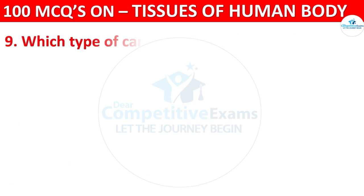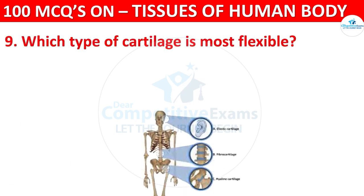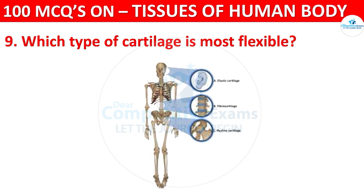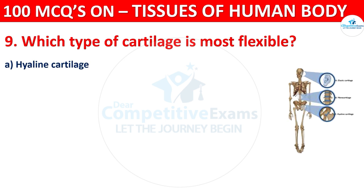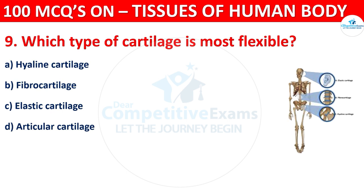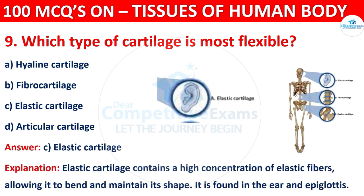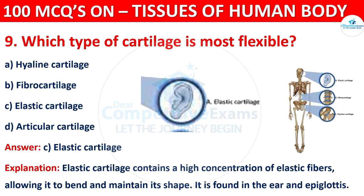Question number nine: which type of cartilage is most flexible? Options are hyaline cartilage, fibrocartilage, elastic cartilage, or articular cartilage. The correct answer is C, that is elastic cartilage. Elastic cartilage contains a high concentration of elastic fibers, allowing it to bend and maintain its shape. It is found in the ear and epiglottis.